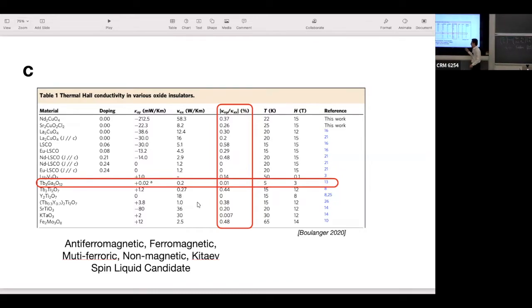These materials look very diverse. They're anti-ferromagnetic materials, ferromagnetic, multi-ferroic, non-magnetic. Even some Kitaev spin liquid candidates were in there. They're very diverse. My talk is on the cuprates, so it's mostly these materials.